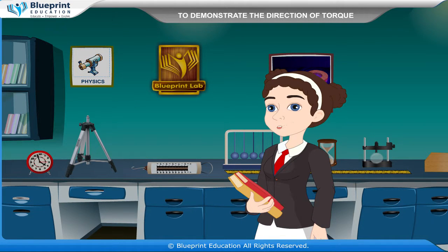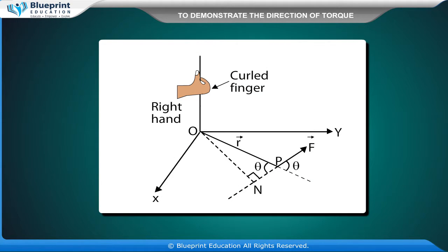Student: Madam, how can we demonstrate the direction of torque? The SI unit of torque is Newton meter. It is a vector quantity and its direction can be found using the right-hand rule. According to the right-hand rule, if the fingers of the right hand are curled from R towards F through the smaller angle between them, then the thumb will represent the direction of torque.